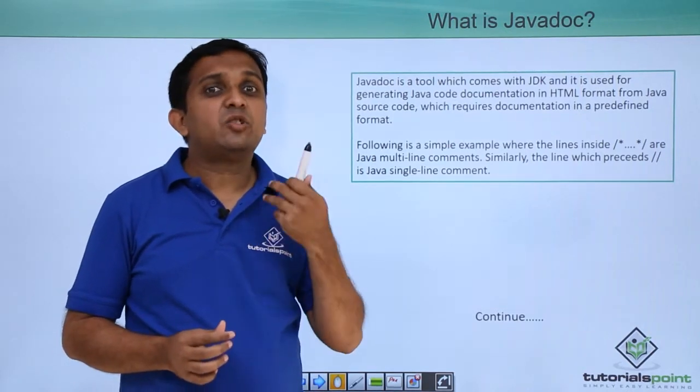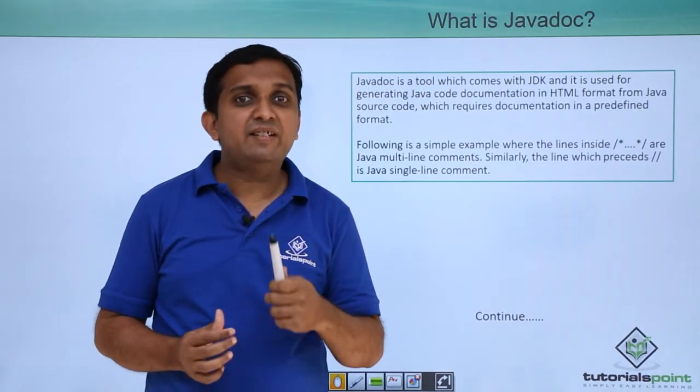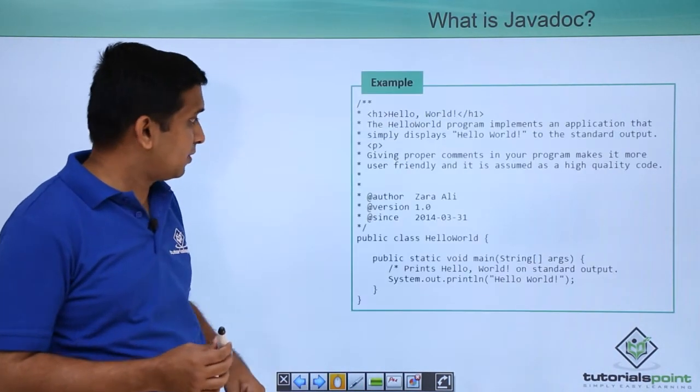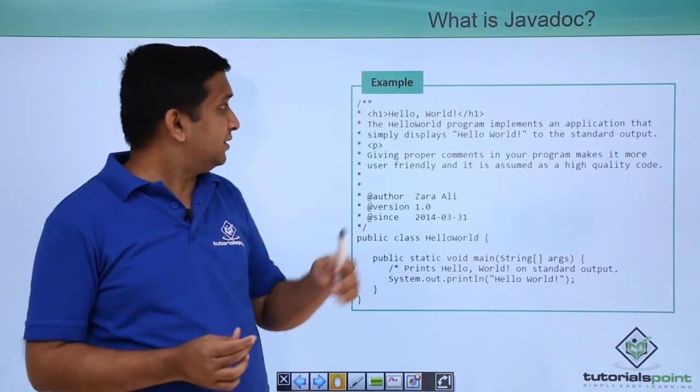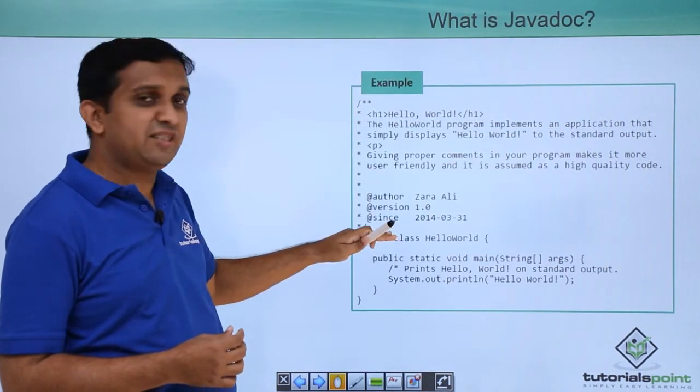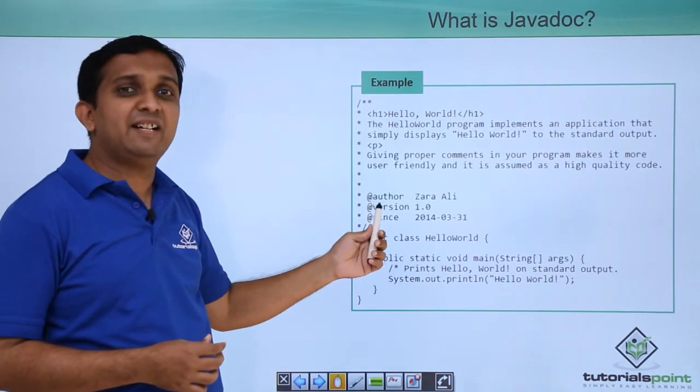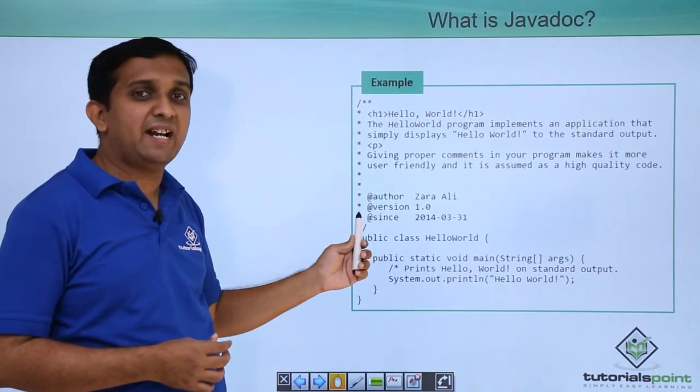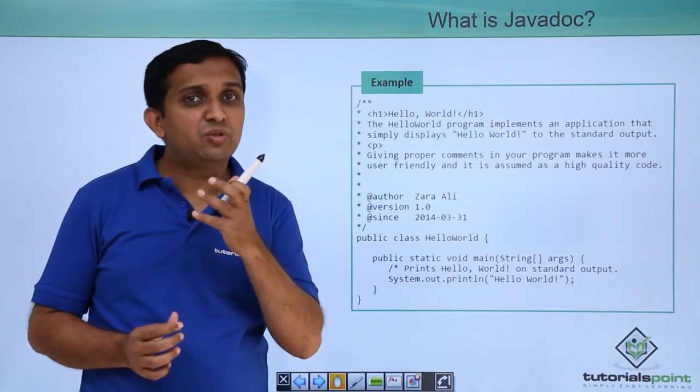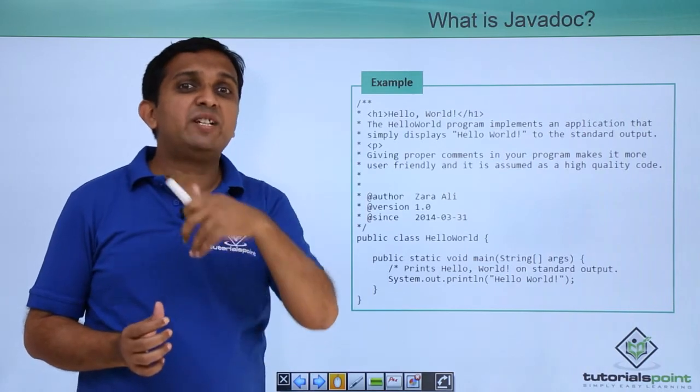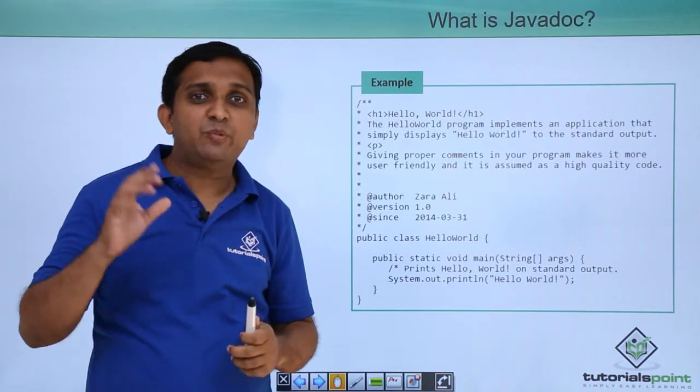Now in that documentation tag or documentation comment there are different tags predefined. So here one example is shown. You can see that this is the documentation comment from first line to the main method. In that they have defined tags like @author, @version. These are the predefined tags and the values which occur in front of those tags will go inside the HTML documentation created by javadoc at appropriate places.